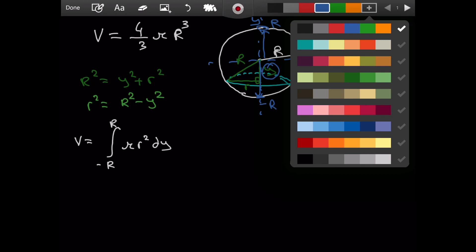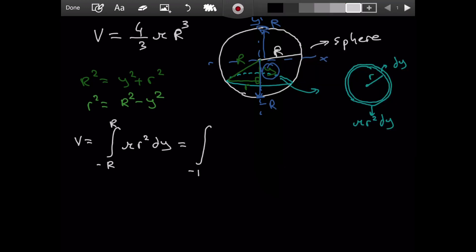Now, we want to take this integral. Negative r, r. Pi r squared. Well, we can substitute for r squared. It is right here. We have pi. And actually, we can take pi out of the integral sign. It is just a constant. So, what is r squared? It is capital r squared minus y squared. And we have the dy here.